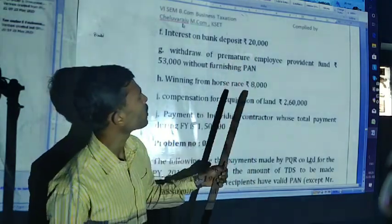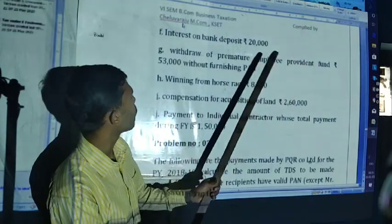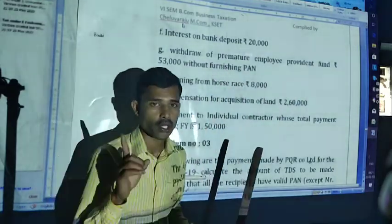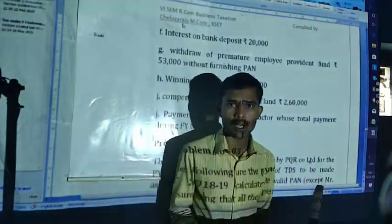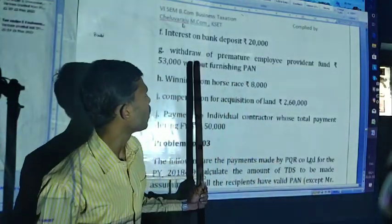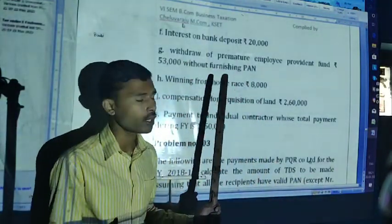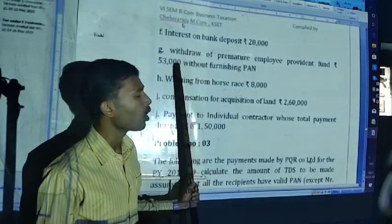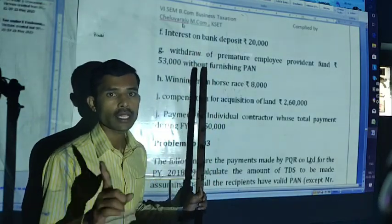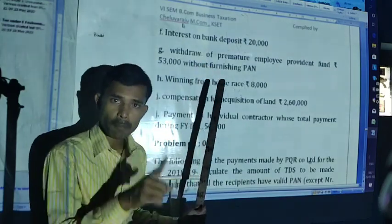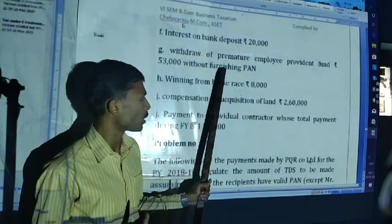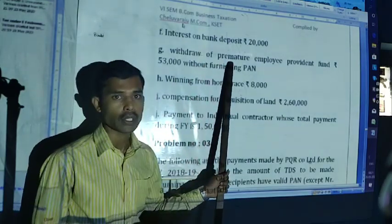LIC — premature amount withdrawn from provident fund: 53,000, without furnishing the PAN. Remember, without furnishing the PAN. Up to 50,000 — no TDS. But here the amount is 53,000. With PAN: 10%. Without PAN: 20%. It is a special case.